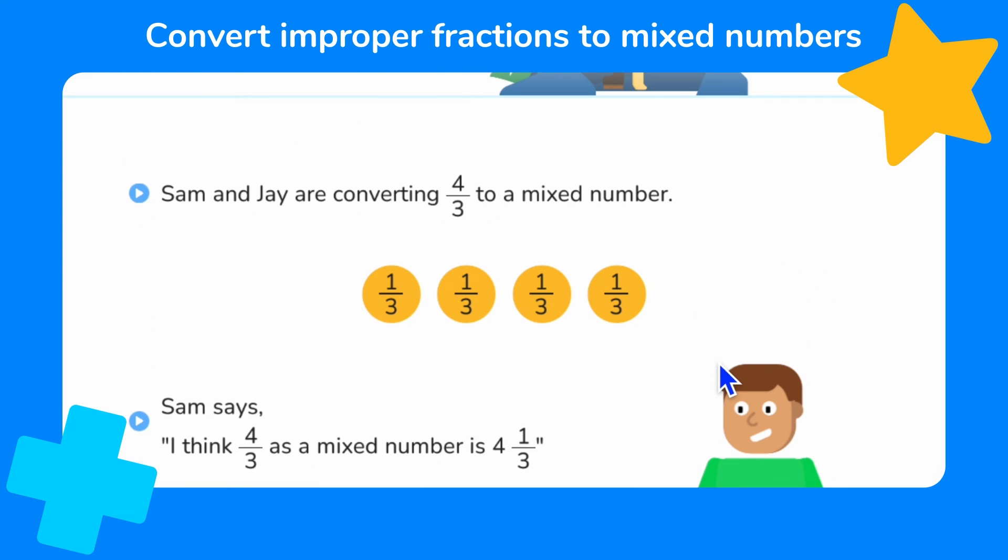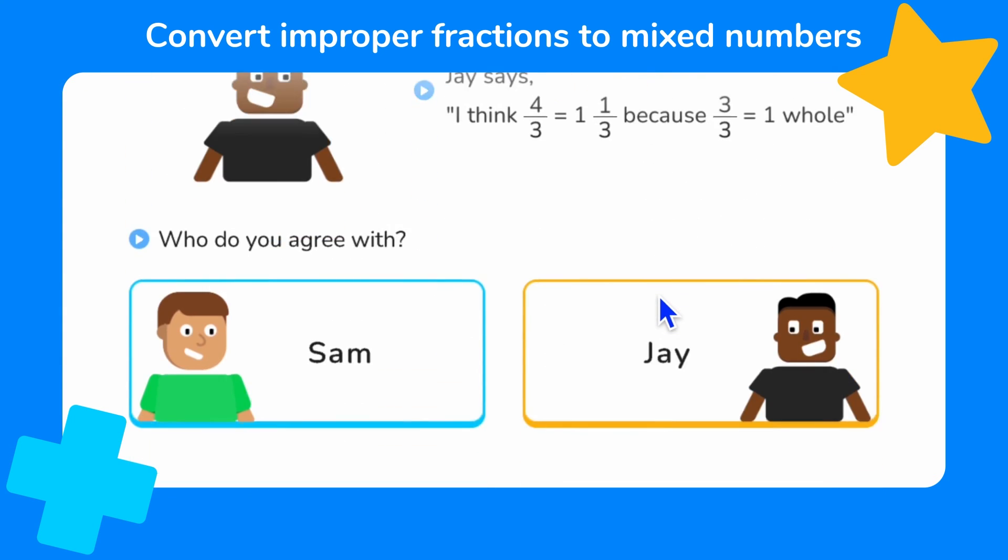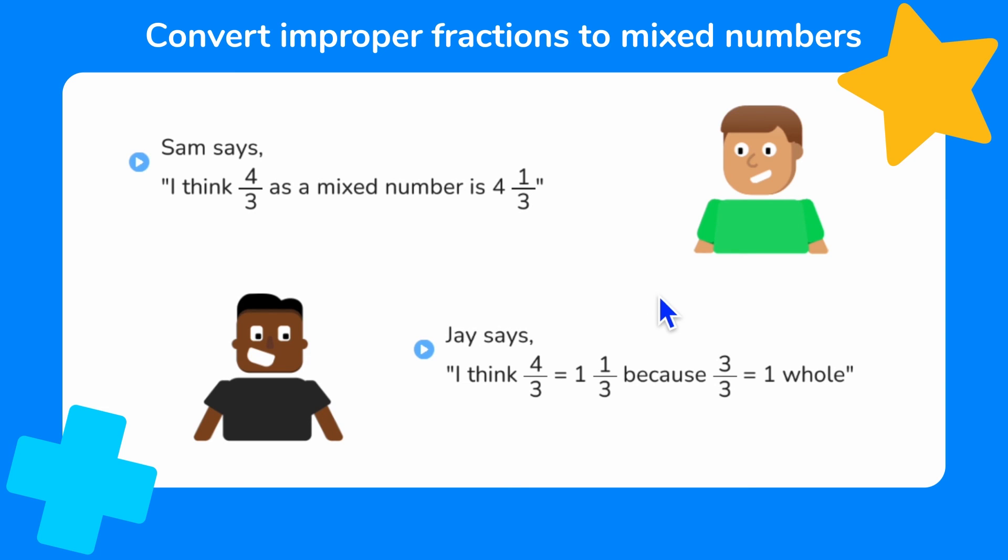Let's go back to the model. How many thirds are there in 1 whole? Think of a shape split into thirds. 3 thirds are equal to 1 whole. So these 3 counters make 1 whole and then we have 1 third left. So who do you agree with? Sam or Jay?